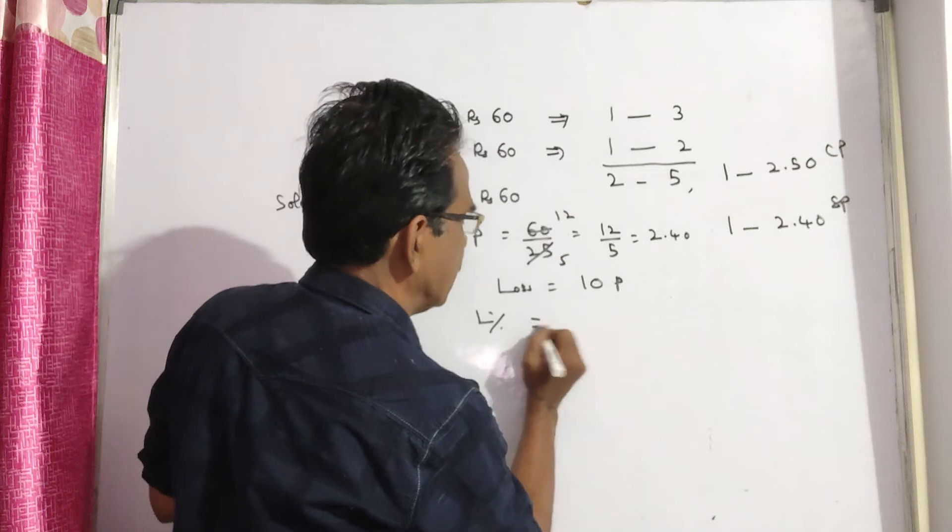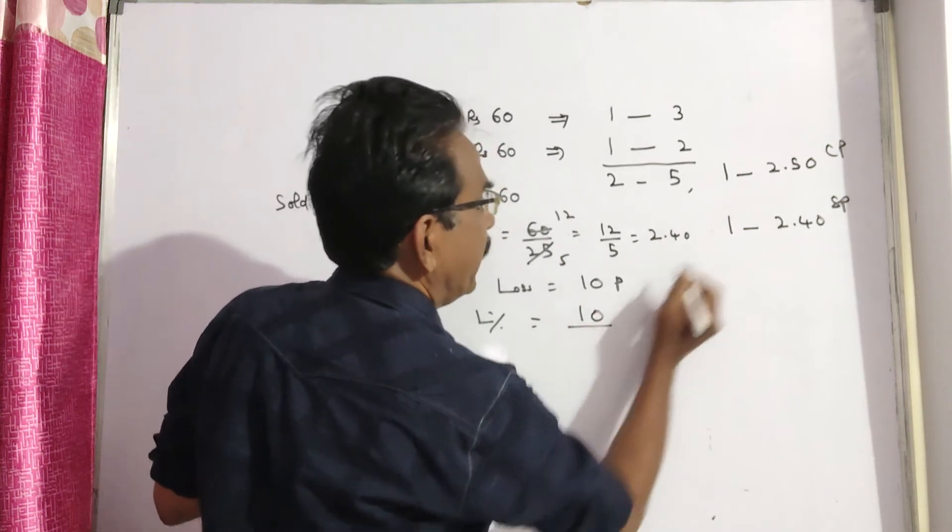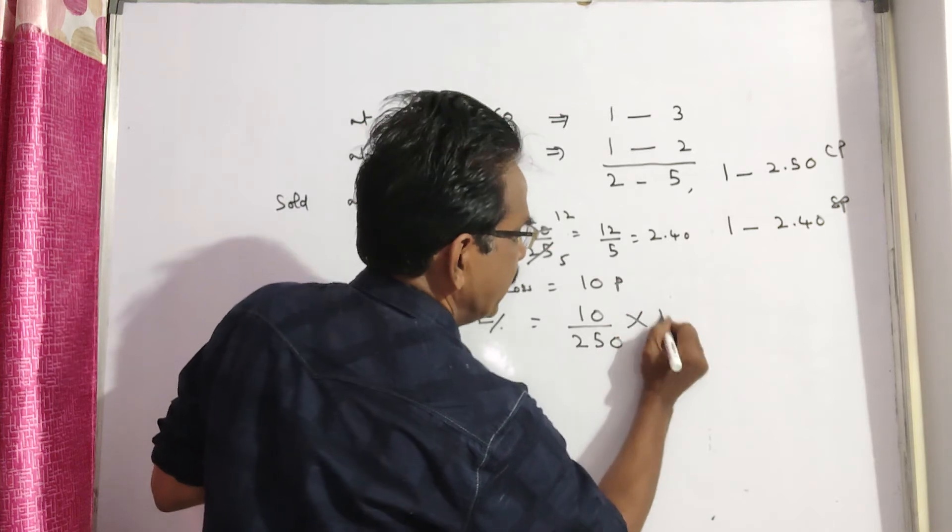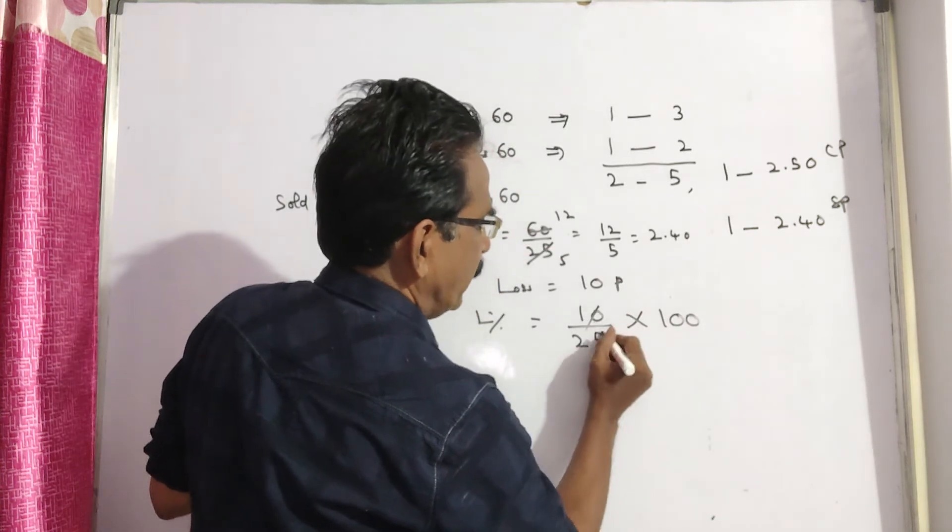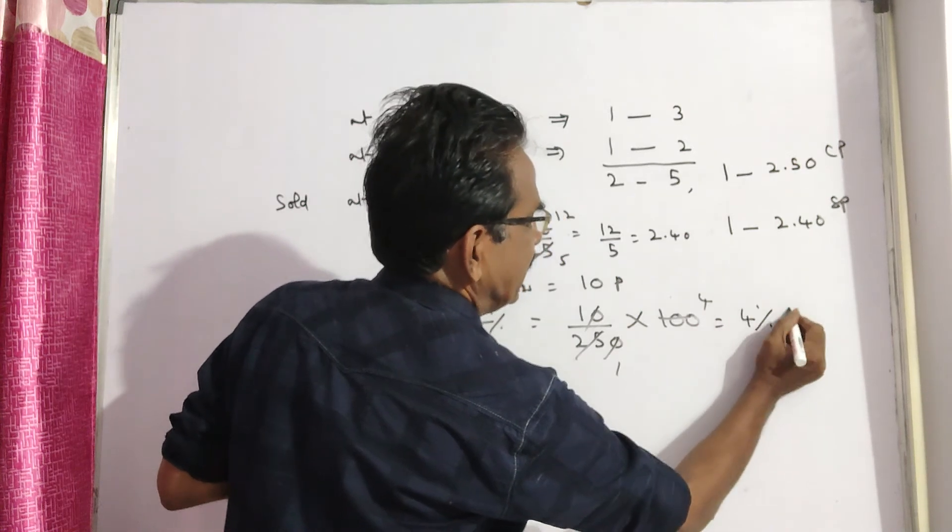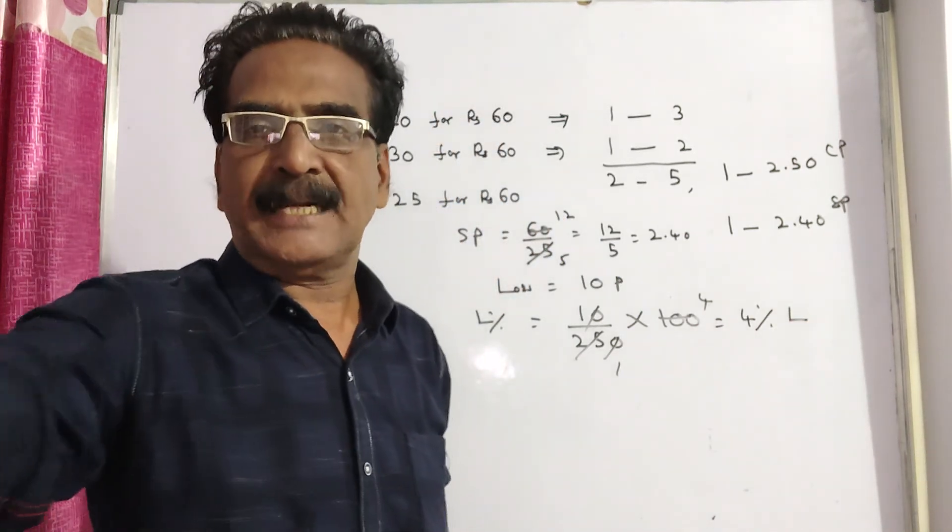Now, loss percent. Loss percent is equal to loss divided by cost price, which is 10 paise divided by Rs. 2.50, that means 10 paise divided by 250 paise, times 100. That's 10 times 100 divided by 250, which equals 4. So he is getting a loss of 4 percent.